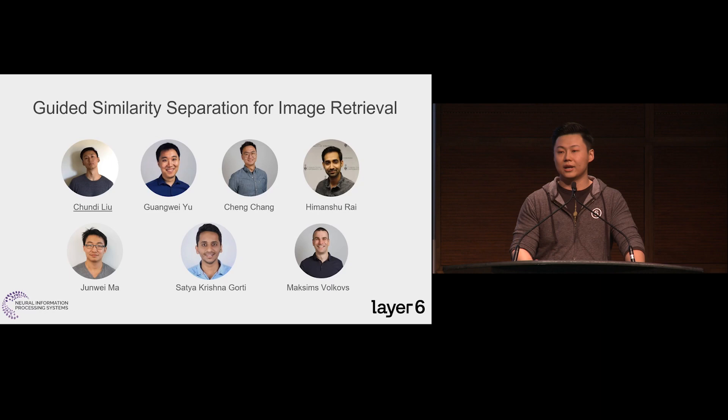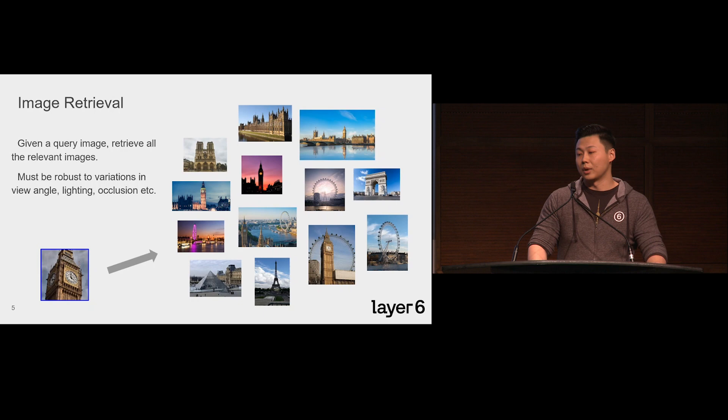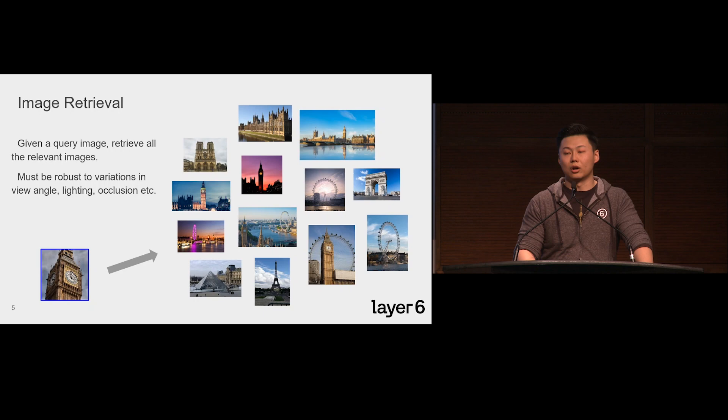All right, if you are interested in Layer 6 and the work we have done, please come to see me at the networking event after the talks. I'd love to answer any questions you have, but now let's focus on this paper, Guided Similarity Separation for Image Retrieval. It's our honor to be selected to give an oral presentation at NeurIPS 2019, and here as well. This work is jointly done with Guang, Jason, Himanshu, Jeremy, Satya, and Max.